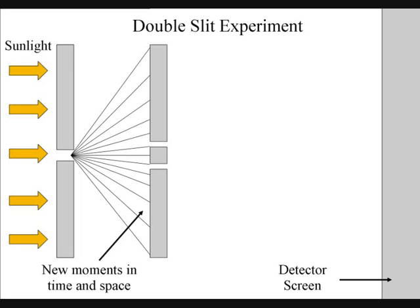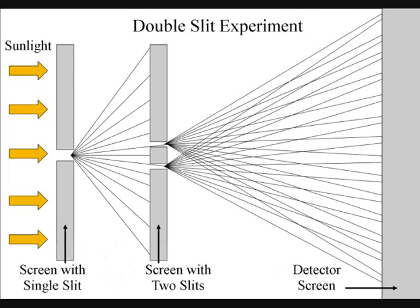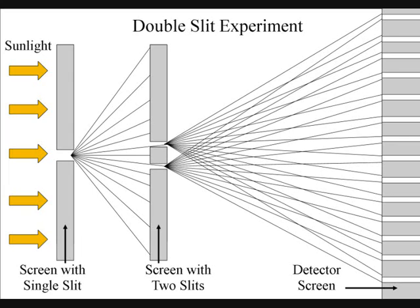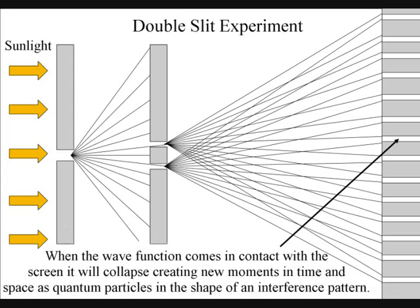The part of the wave that does not come in contact with the screen will expand in all possible routes, going through both slits. When this wave-particle function comes in contact with the screen, it will collapse, creating moments in time and quantum particles in the shape of an interference pattern.